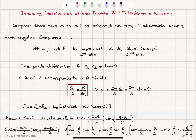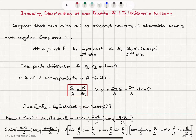The total electric field at point P is the sum of contributions from slit 1 and slit 2: E0 sin(ωt) + E0 sin(ωt + φ), where φ is given by (2π/λ) d sinθ.